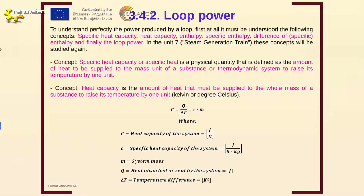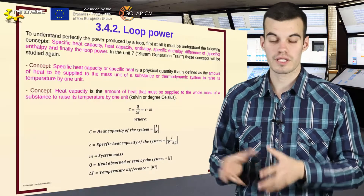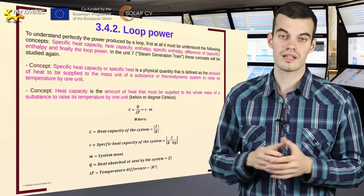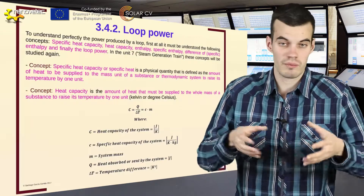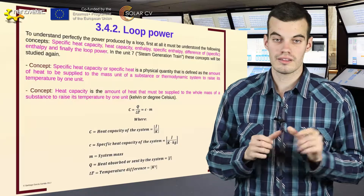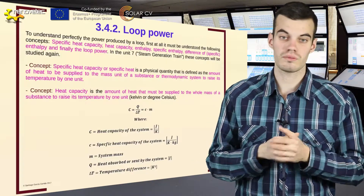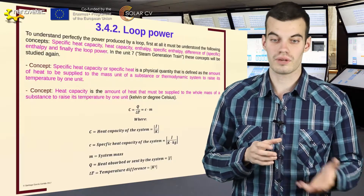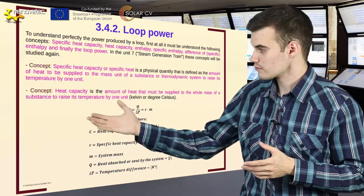First of all, we must understand specific heat capacity. Specific heat capacity is the amount of energy which must be supplied to a kilogram of substance to raise its temperature by one degree. For example, we have a kilogram of rice and it is going to have a specific heat capacity that determines the amount of heat to be supplied to this kilogram of rice to elevate its temperature by one degree.